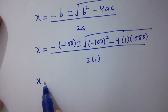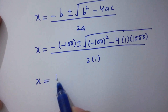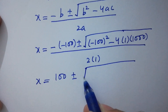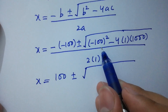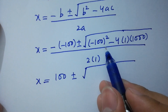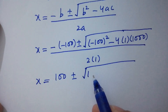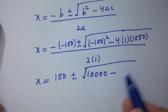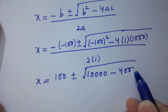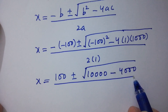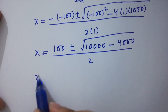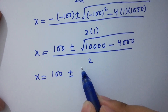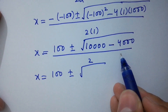This gives x equals 100 plus or minus square root of (10000 minus 4000) over 2, which equals 100 plus or minus square root of 6000 over 2.